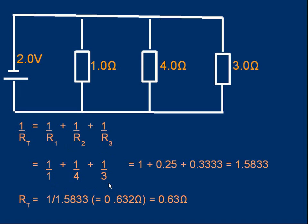Working with a calculator: 1/RT = 1 + 0.25 + 0.3333, which adds up to 1.5833. Remember, that's the value of 1/RT. To get RT, we calculate RT = 1/1.5833, which gives 0.632 ohms. It's sensible to give the final answer to two significant figures since the data is given to two significant figures — so RT = 0.63 ohms.